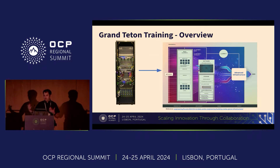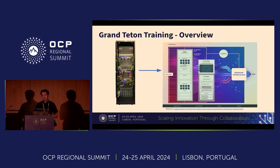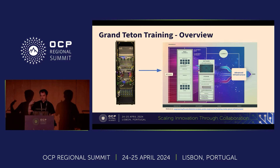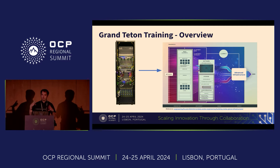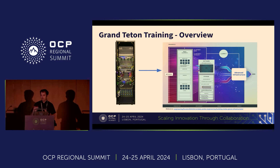Looking at a rack itself, for example, this is one of our recent racks that we announced at OCP — this is the Grand Teton rack. It's basically made up of two Grand Teton systems with 16 accelerators. The system itself has a backend switch, and this is the main rack that we're using to train our models today, like Llama 3 that was also announced.